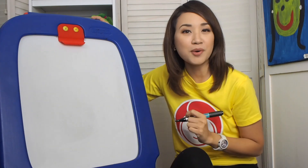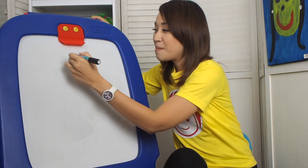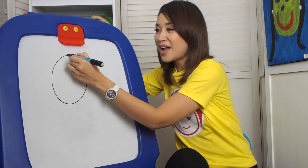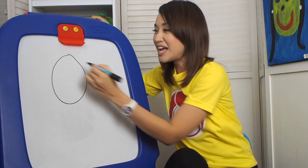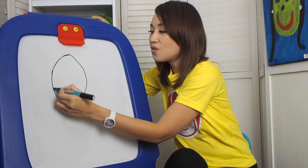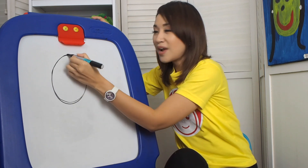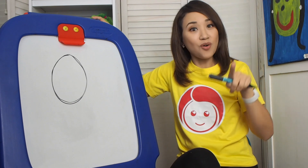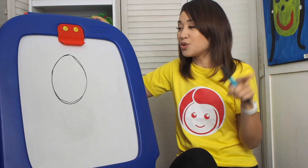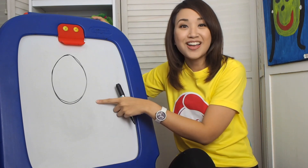Our lesson for the day is how to write numbers from zero to five. Are we all ready to listen? Good job. First number, I'll be teaching you the number zero. So how do you write number zero? Make an oval and then go round to make the number zero.